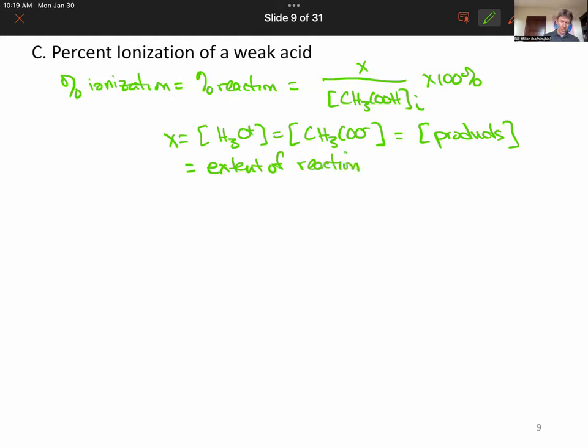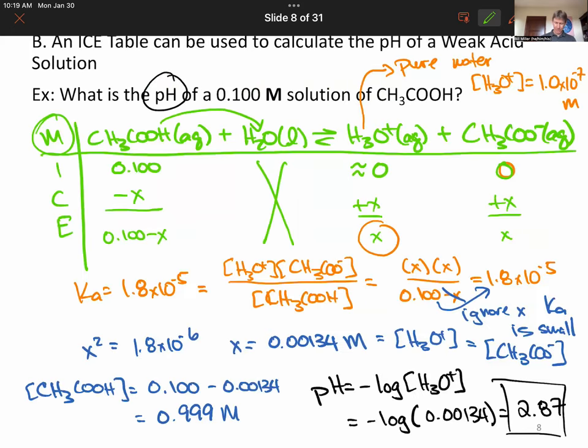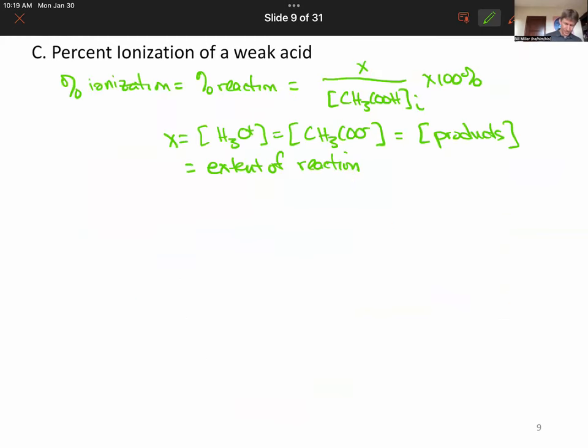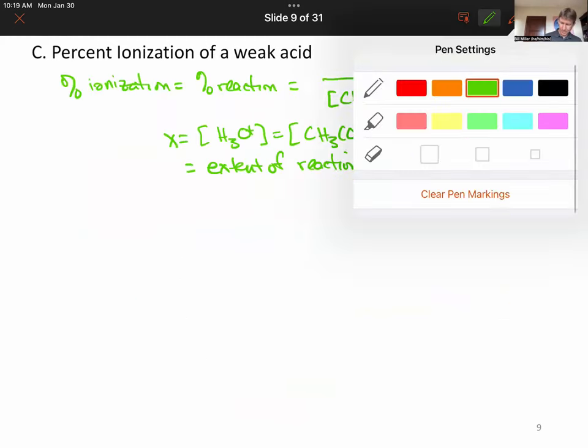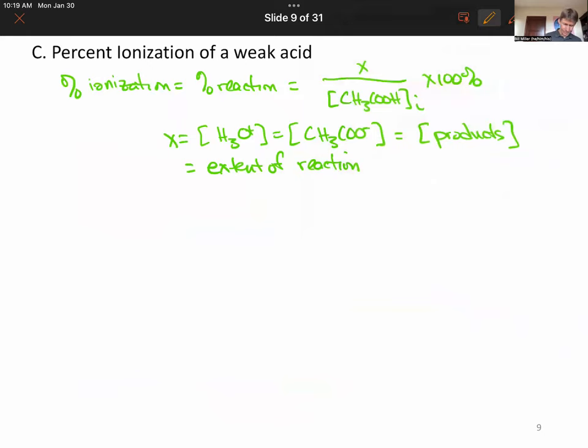So from our previous problem, we've got X equals 0.00134 over our initial concentration of acetic acid, which was 0.1.